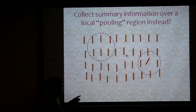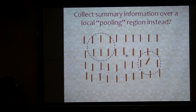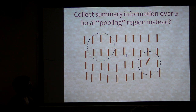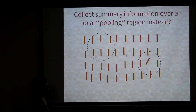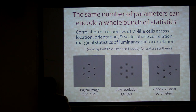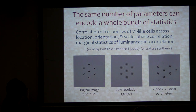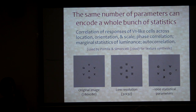We'd like to suggest that instead what happens is, if here's your fixation, your visual system lays down pooling regions — a whole bunch of local pooling regions all over the visual field — and collects some kind of summary information over those pooling regions, like maybe summary statistics of the responses from really early vision. If you do this kind of strategy, it turns out you can store basically a whole ton of information in 1,000 summary statistics instead of 1,000 pixels or 1,000 V1 responses.